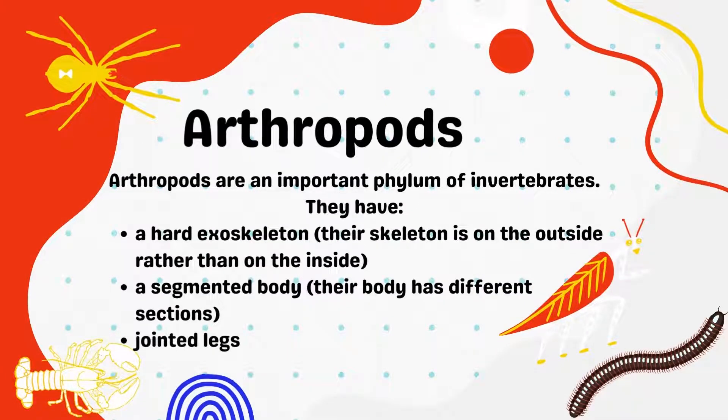Arthropods are an important phylum of invertebrates. They have a hard exoskeleton, meaning their skeleton is on the outside rather than on the inside. They also have a segmented body, meaning their body has different sections. They have jointed legs.